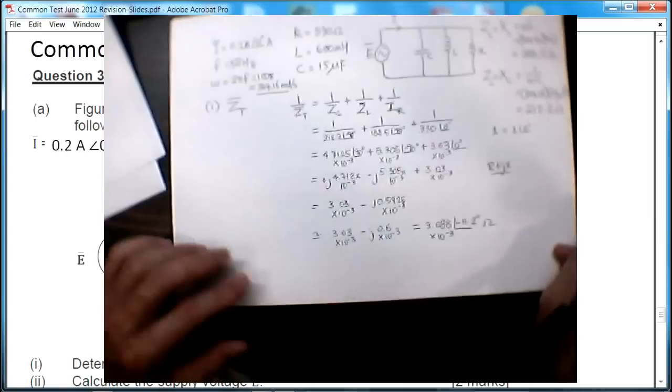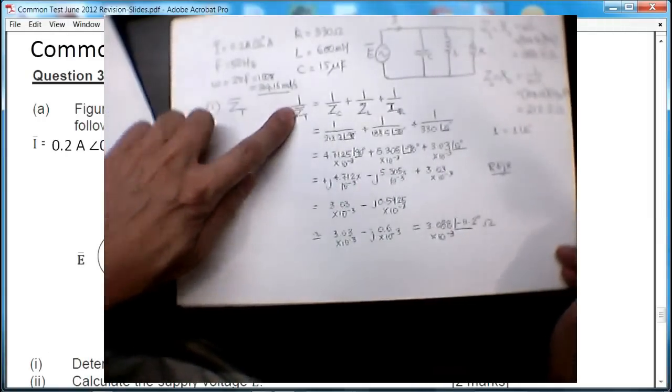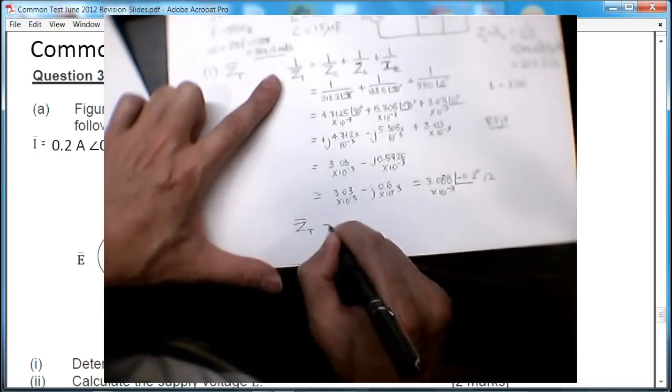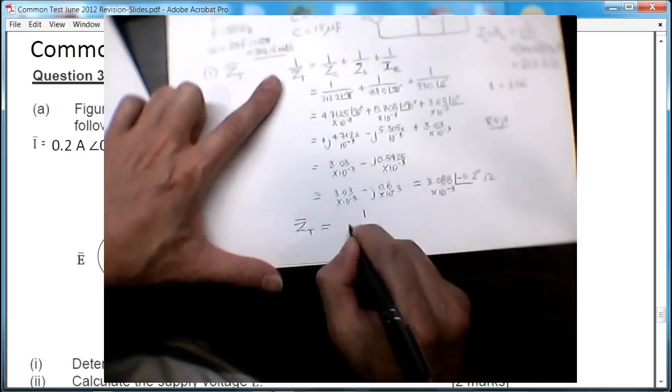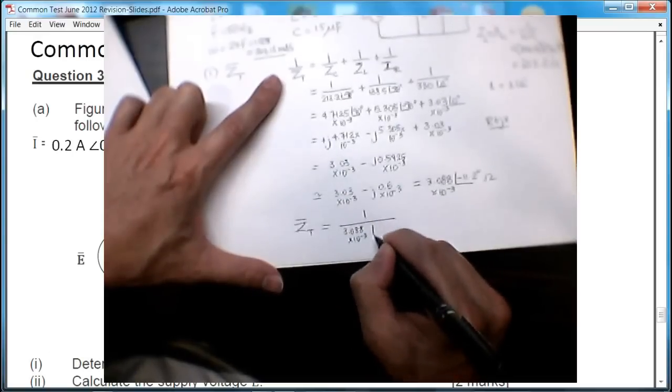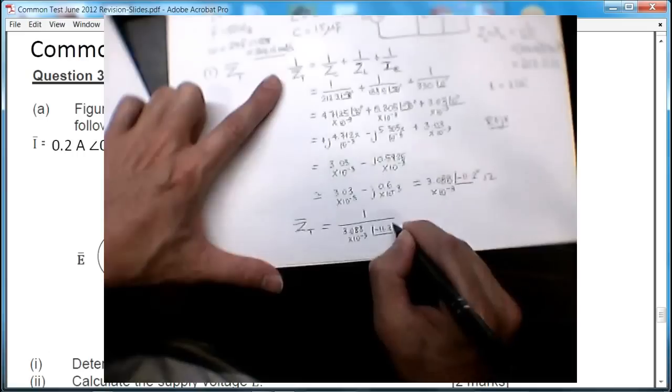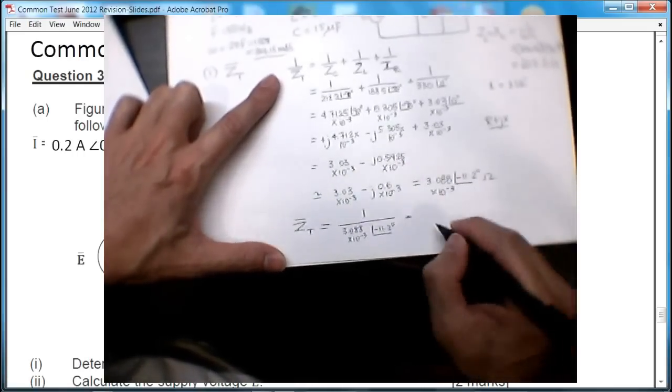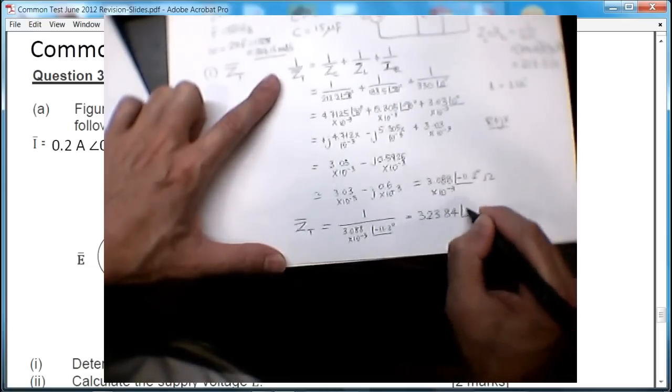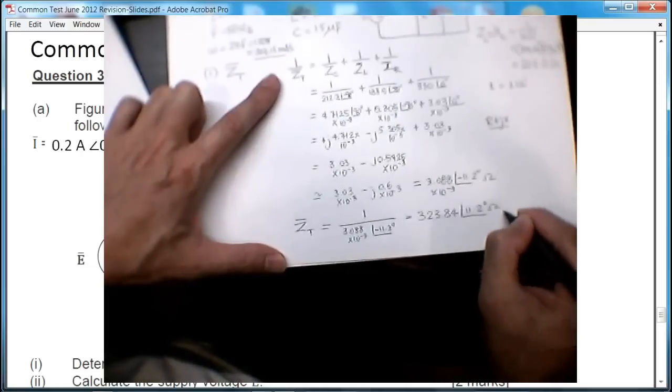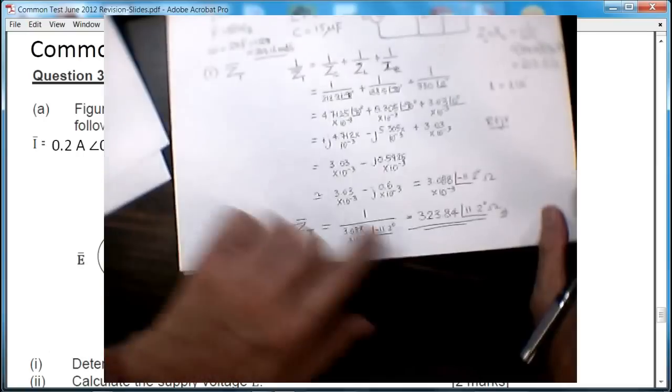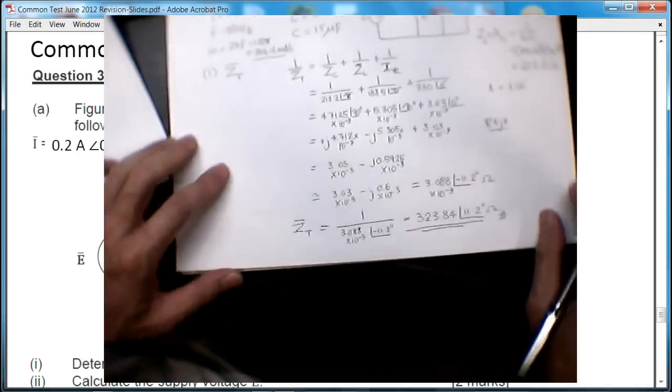All right, now this is 1 upon Z total, so in order to find Z total, I have to invert this again. So I get 1 upon 3.088 times 10^-3 at the angle of minus 11.2 degrees. That gives me the final answer of 323.83 at the angle of 11.2 degrees ohms. Right, here we are. This is the first part, total impedance of the circuit given here.